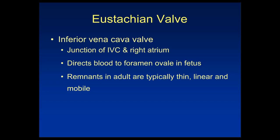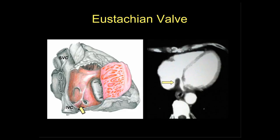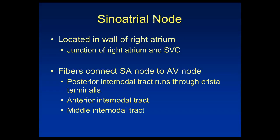The eustachian valve is the valve of the inferior vena cava, located at the junction of the IVC and the right atrium. It serves in the embryo to direct blood to the foramen ovale. The remnants in the adult are typically thin, linear, and mobile. On a contrast-enhanced CT, we see a finger-like projection into the right atrium. This was initially concerning for a lesion, but echocardiography confirmed it was a prominent eustachian valve.